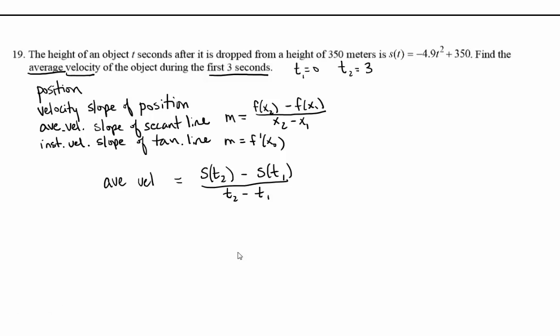Velocity is the derivative if it's instantaneous velocity we're talking about. Instantaneous acceleration is the derivative of the velocity function, the second derivative of the position.